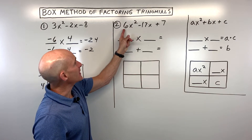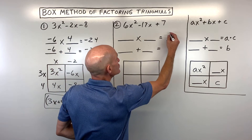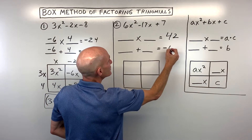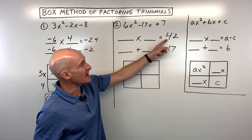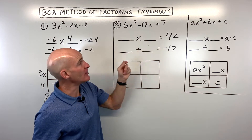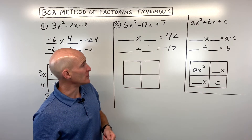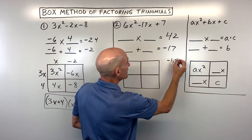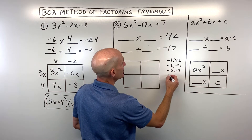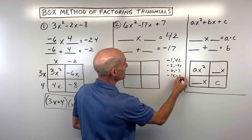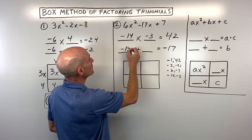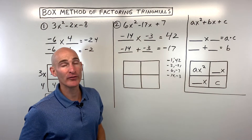Let's go through this process. A times C: 6 times 7 is 42. So we're looking for two numbers that multiply to 42 but add to the middle coefficient, negative 17. A negative times a negative is a positive, and a negative plus a negative is a negative, so both numbers have to be negative. It could be negative 1 and negative 42, negative 2 and negative 21, negative 6 and negative 7, or negative 14 and negative 3. It looks like negative 14 and negative 3 — that multiplies to positive 42, and adding those gives negative 17.